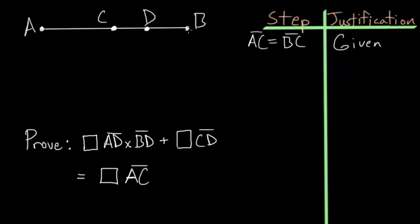Basically, if we have some straight line — in this case line AB — and we first cut it into equal sections at point C, so that AC and BC are equal in length, and we also cut it into two unequal sections AD and DB, then what we're trying to prove is that if we form a rectangle between lines AD and BD and add this to the square formed by the short section CD, this equals the square on the half.